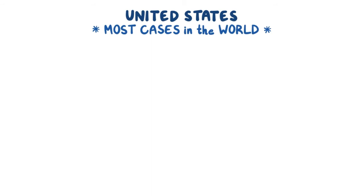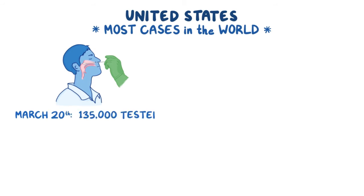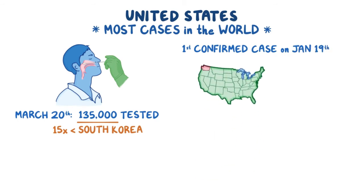Next, let's look at the United States, which has the most cases in the entire world and where the number of cases continues to rise quickly. In terms of testing, based on the March 20th data, the US lags behind with only 135,000 people tested, which works out to 1 out of every 2,424 people, roughly 15 times less than South Korea, despite both countries having their first confirmed case on January 19th, one in the state of Washington and the other in Seoul, Korea.